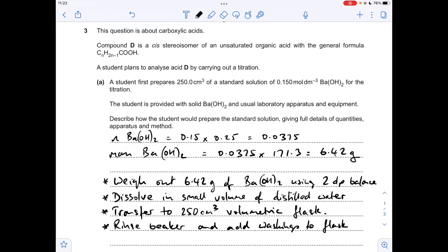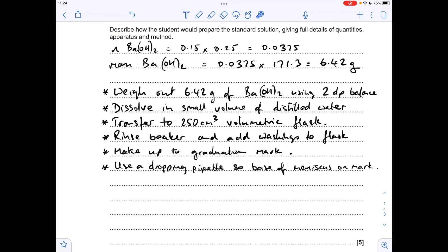We'd then need to rinse the beaker that we dissolved the barium hydroxide in and add the washings to the flask, the volumetric flask obviously. We'd then need to make the solution up to the graduation mark, but we're going to include this extra detail here. We're going to use a dropping pipette so that the base of the meniscus is sitting on the mark. And then the final thing we need to do is stopper and invert several times to mix it all together.